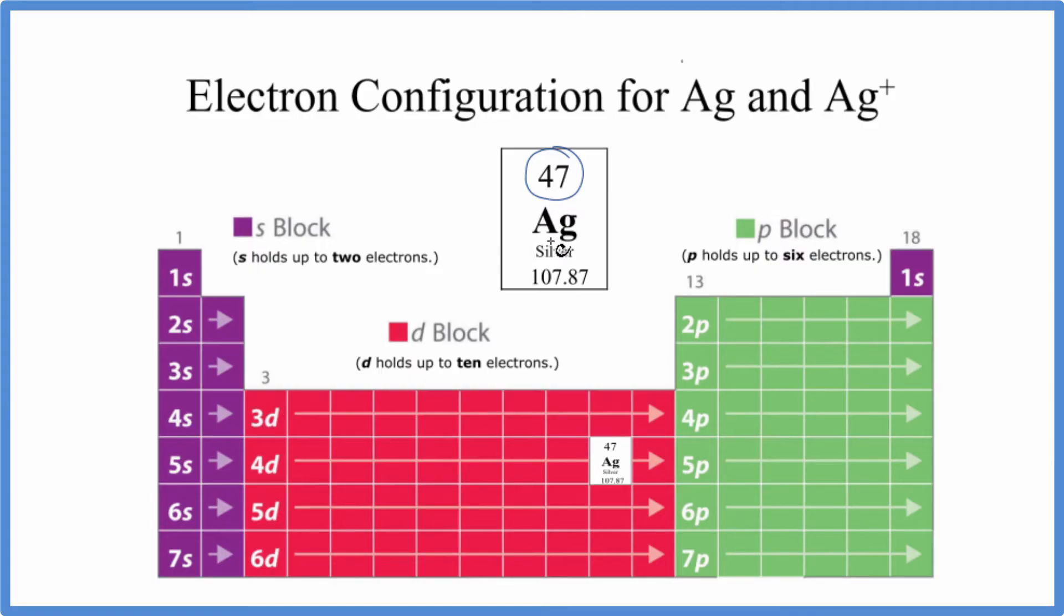Let's write the electron configuration for silver. We'll start here. We have 1s¹, 1s². That's full, so we're just going to write 1s².